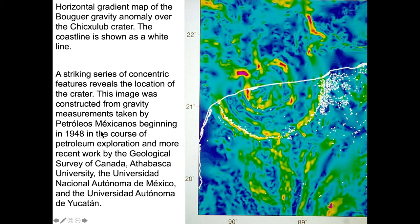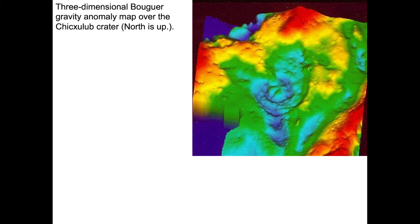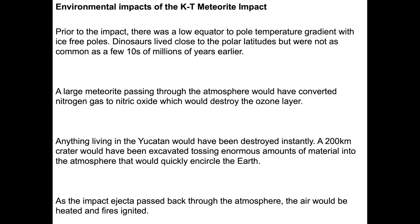Here is the center of the crater, discovered by Mexican petroleum exploration and by some people working out of Canada. This is a three-dimensional map showing the same thing. The crater center is a bit like if you drop a pebble or a Skittle into a cup of coffee — you'll see the surface deform downward, then rebound in the center. In this case, it rebounds and solidifies, leaving a permanent record. Environmental impacts of the meteorite include a change from a low equator-to-pole temperature gradient — there was no ice at the poles at this time. The Earth had an equitable climate, not much cooler at high latitudes. Dinosaurs lived close to polar latitudes but weren't as common as a few tens of millions of years earlier, implying temperatures were going down slowly for tens of millions of years leading up to the impact.